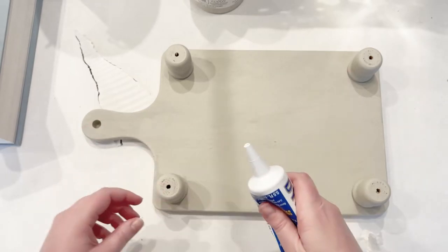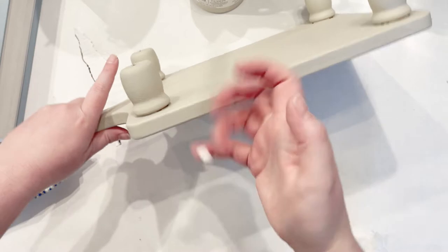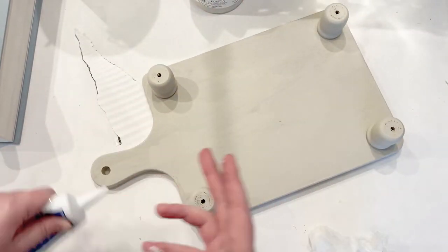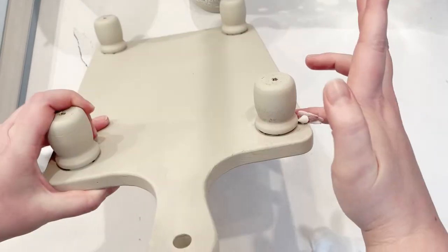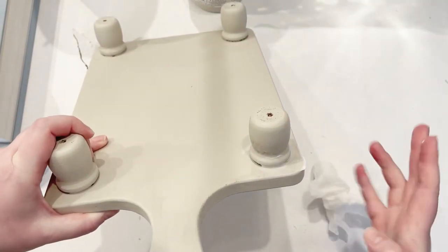Now that I have everything painted and it's good and dry, I'm going to go back in with a little bit of latex caulk and just fill in the seams around all of the little legs to give it a finished look and help hold everything together a little bit better too.